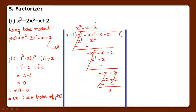We performed this division so that we get a quadratic polynomial. From that quadratic polynomial, we can find two more factors using the splitting the middle term method. One factor we already got from hit and trial, two more we will get from the quadratic, giving us three factors total to factorize the given polynomial.